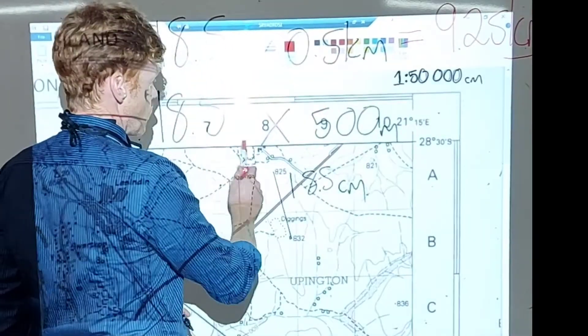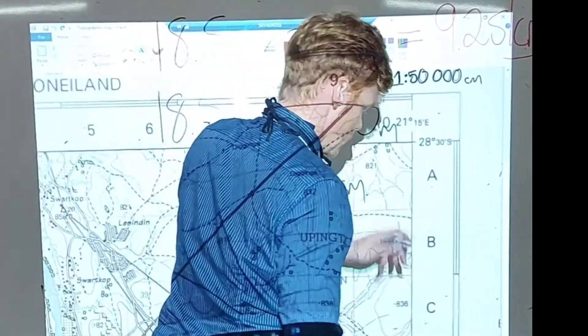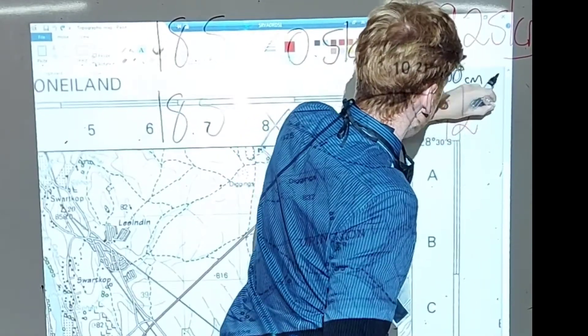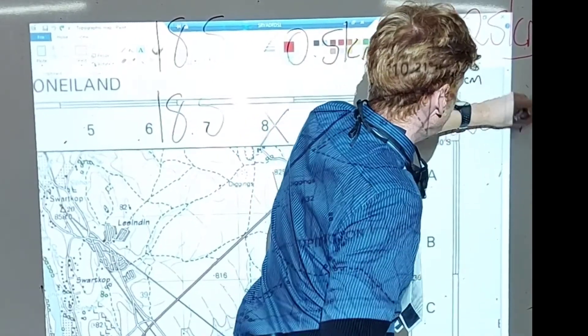Okay, so if we take 18.5 times 500, our answer would be 9,250 meters.